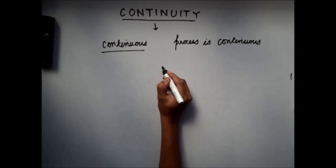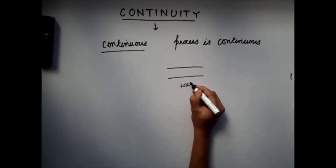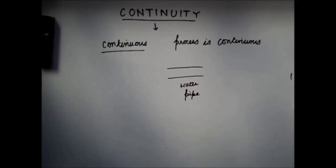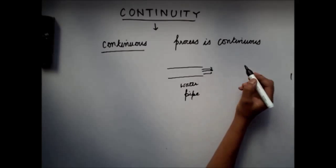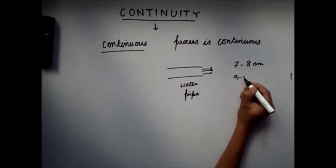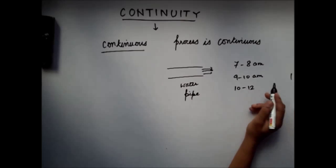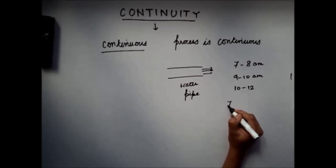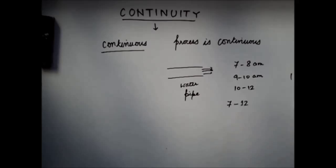For example, if you have a pipe — a water pipe which supplies water — and you have flow of water from 7am to 8am, then from 9am to 10am there is no flow of water, and again from 10am to 12am you have flow of water, then this process is a discontinuous process. Whereas, if you have water continuously flowing from 7am to 12am, then it's a continuous process.